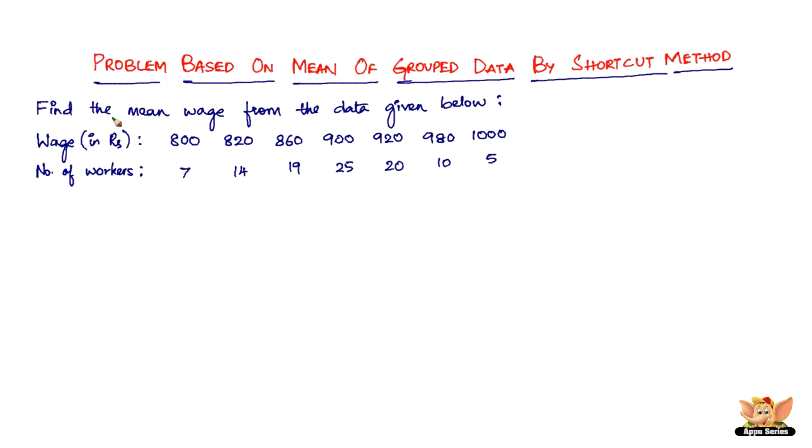So in this video let us continue to solve problems based on mean of grouped data by shortcut method. We've got a problem here which reads like this: Find the mean wage from the data given below.